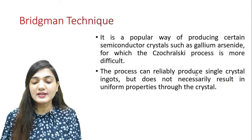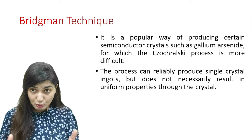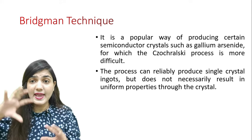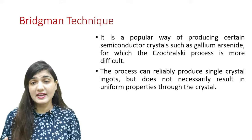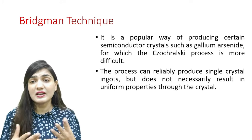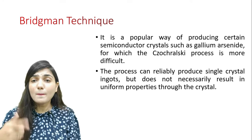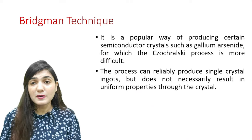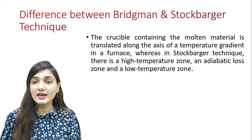The process can reliably produce a single crystal ingot, but it does not necessarily result in uniform properties throughout the crystal. For example, doping concentration may be much higher in one part and much less in another part — this is an undesirable property. The radius throughout the crystal can also be different. We need uniform radius and uniform doping. Due to these problems, the Bridgman technique is not that popular, which is why the Czochralski process is more popular.